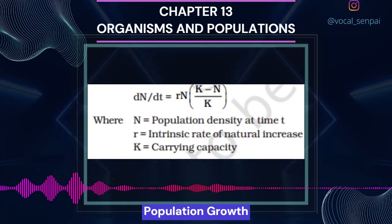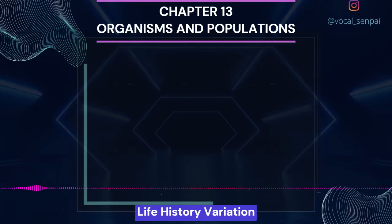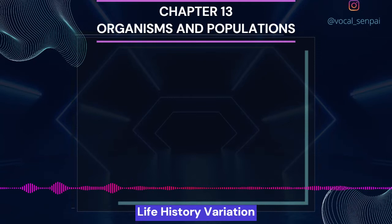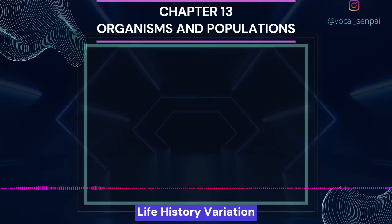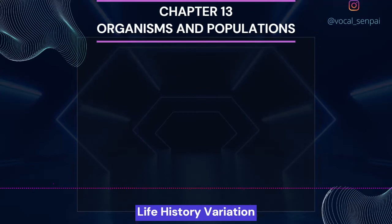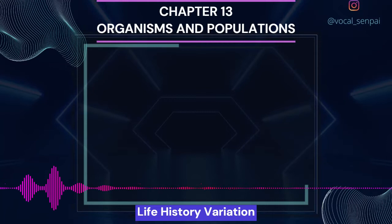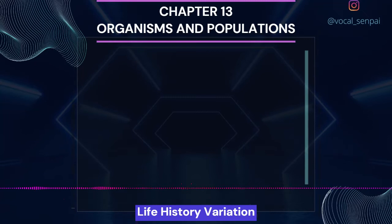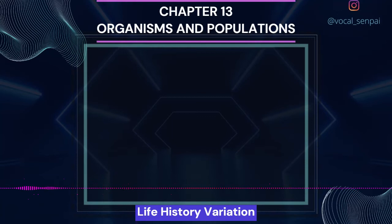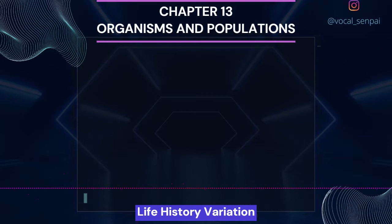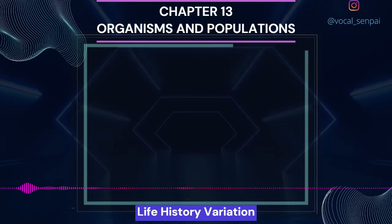Populations evolve to maximize their reproductive fitness — also called Darwinian fitness, high r-value — in the habitat in which they live. Under particular selection pressures, organisms evolve towards the most efficient reproductive strategy. Some organisms breed only once in their lifetime — Pacific salmon fish, bamboo — while others breed many times, like most birds and mammals. Some produce a large number of small-sized offspring — oysters, pelagic fishes — while others produce a small number of large-sized offspring — birds, mammals. Life history traits of organisms have evolved in relation to constraints imposed by the abiotic and biotic components of their habitat.